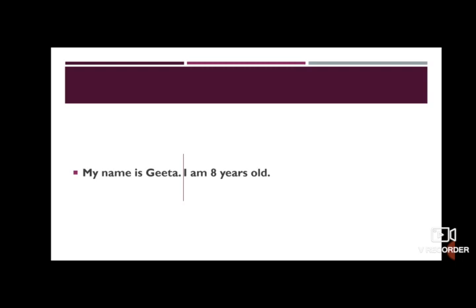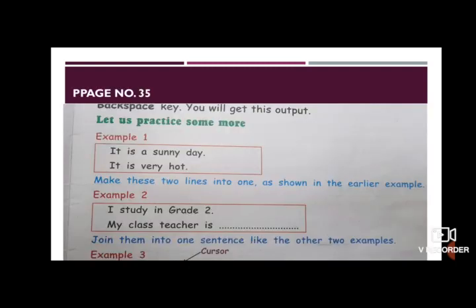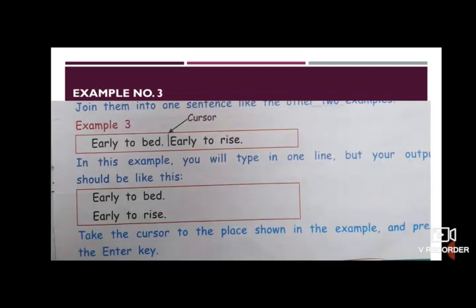Now they have given practice examples. Example 1: 'It is a sunny day' and 'It is very hot' — two different sentences on two different lines. Example 2: 'I study in grade two' and 'My class teacher is —' where you can fill in your teacher's name. To join these two lines into one line, keep your cursor in front of the second line and press the Backspace key.